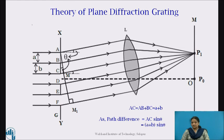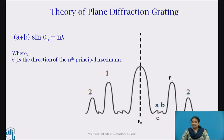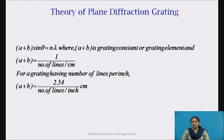If (a + b) sin theta equals lambda, we obtain maximum intensity at P1. When (a + b) sin theta equals 2 lambda, there will again be a maximum, and so on. There will be minimum intensity between the central maximum P0 and the first maximum. Similar maxima and minima are obtained on the other side of the central maximum. On each side of the central maximum, principal maxima and minimum intensity are observed due to diffracted light. The formula is: (a + b) sin theta = n lambda, where (a + b) is called the grating constant or grating element.